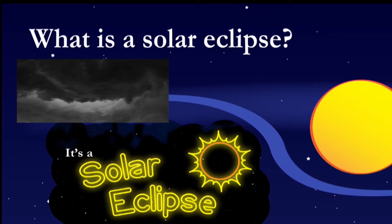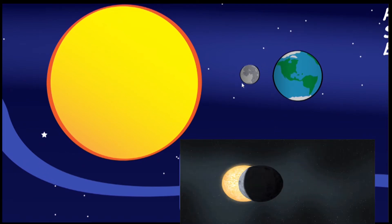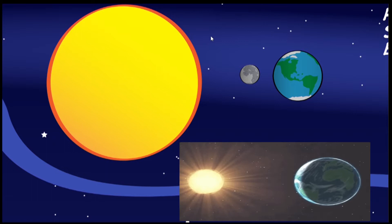What is a solar eclipse? Whoa, it's the middle of the day, so why is the sky getting dark? Well, it's a solar eclipse. A solar eclipse happens when at just the right moment the moon passes between the Sun and Earth.